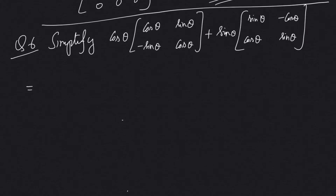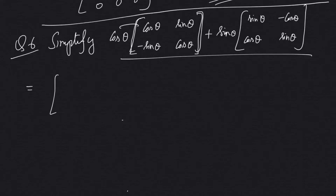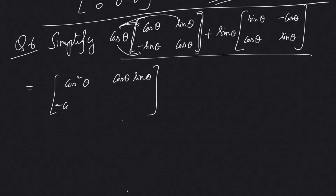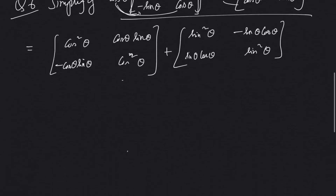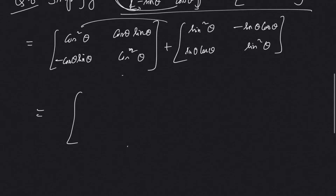Proceeding to question number 6: simplify this value. Again the same concept — multiplication of a matrix by a scalar. So we multiply cos θ through the matrix: cos θ × cos θ = cos²θ, cos θ × sin θ = cos θ sin θ, cos θ × (−sin θ) = −cos θ sin θ. Again cos²θ. Plus sin θ: sin²θ, −sin θ cos θ, sin θ cos θ, sin²θ. Now addition of matrices, adding corresponding elements.